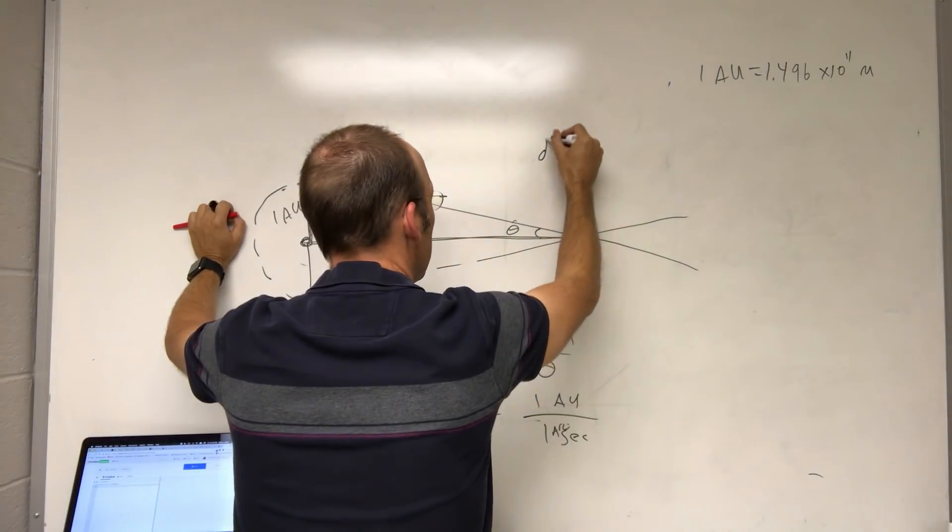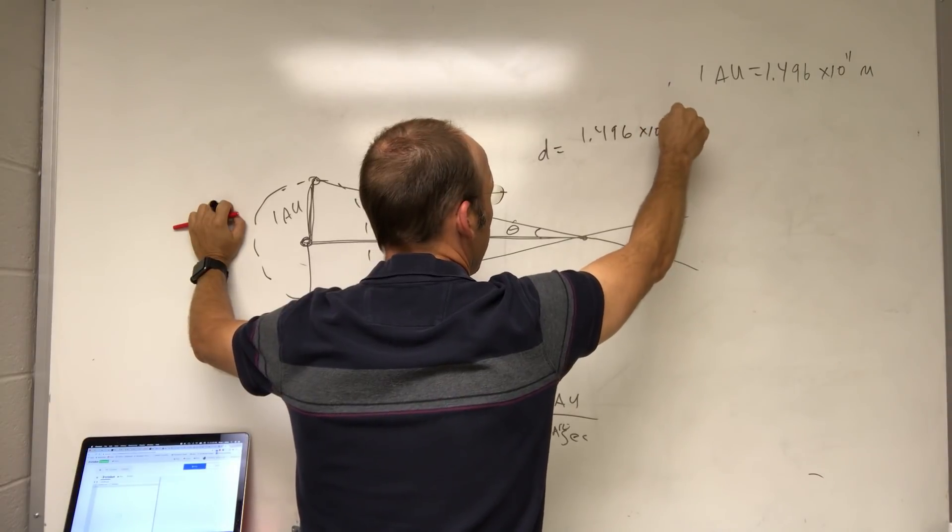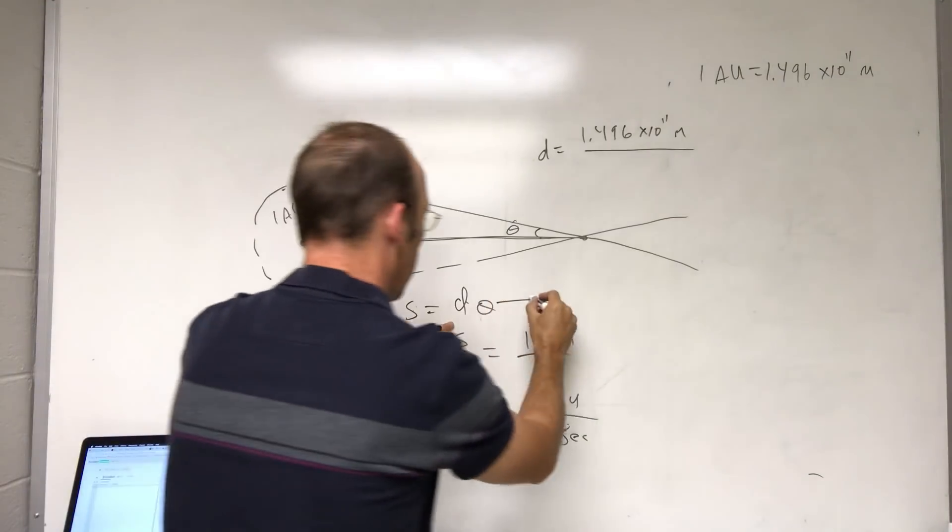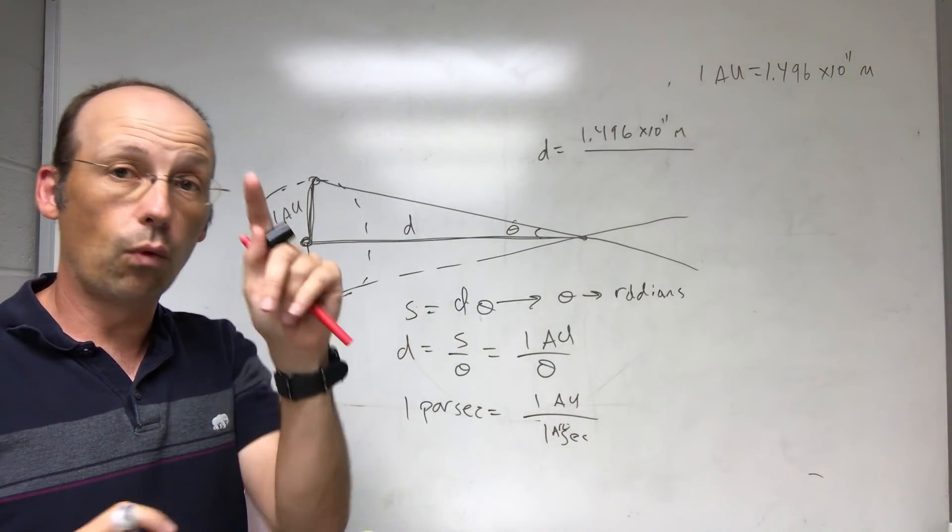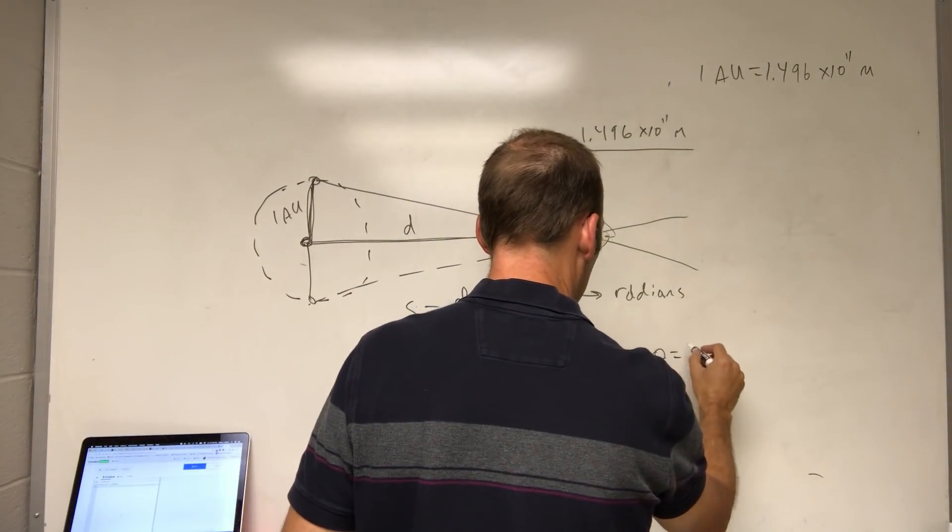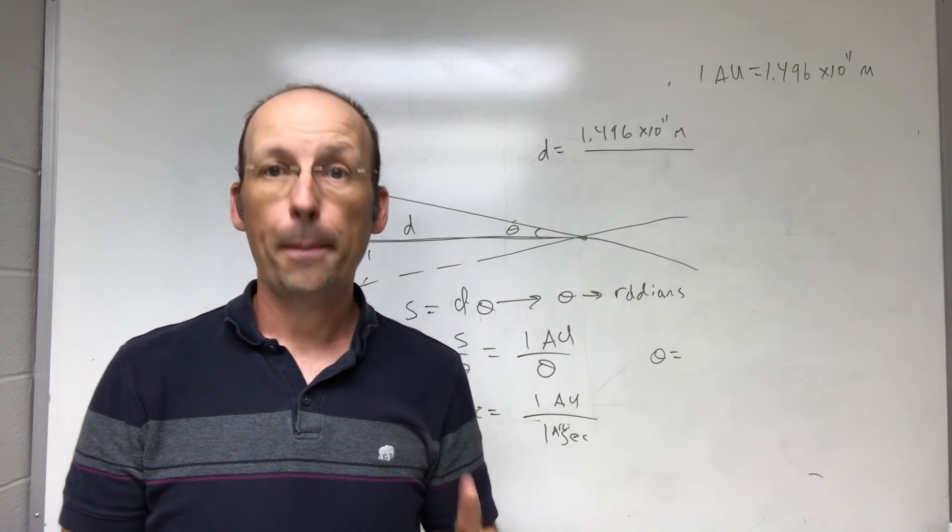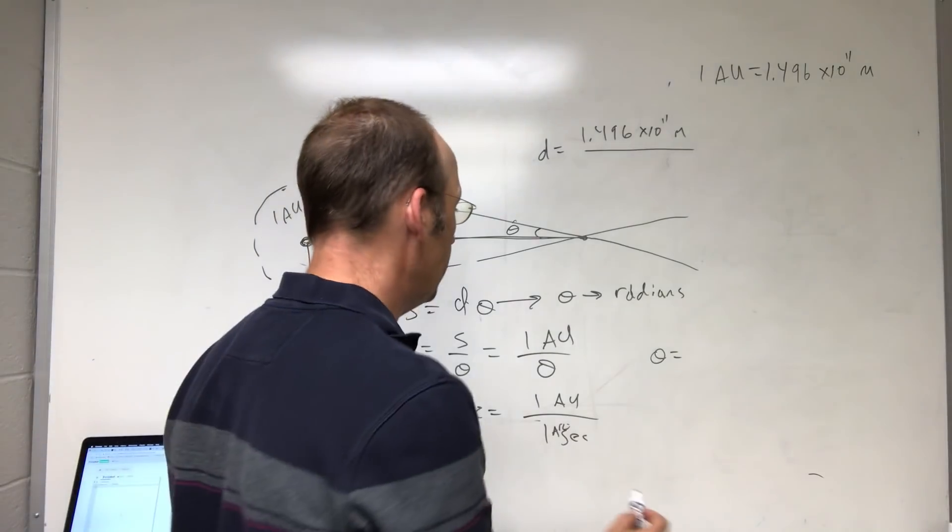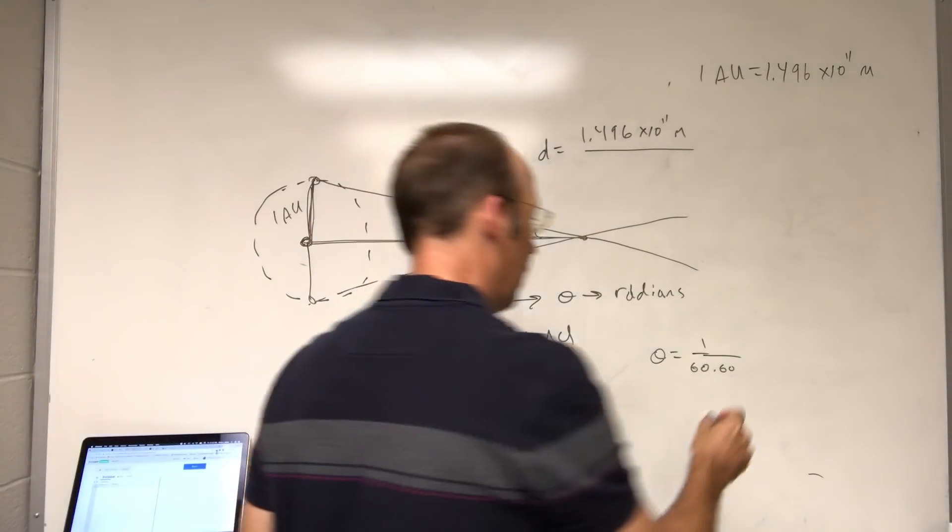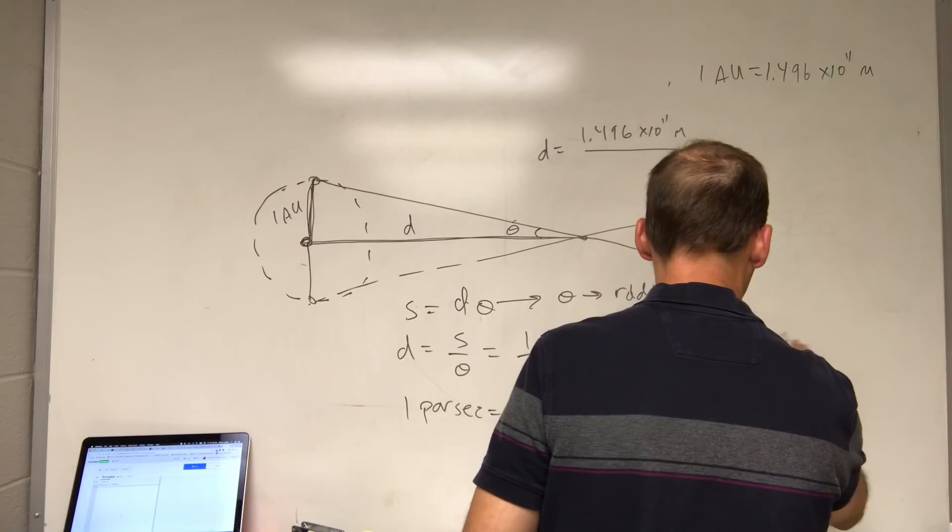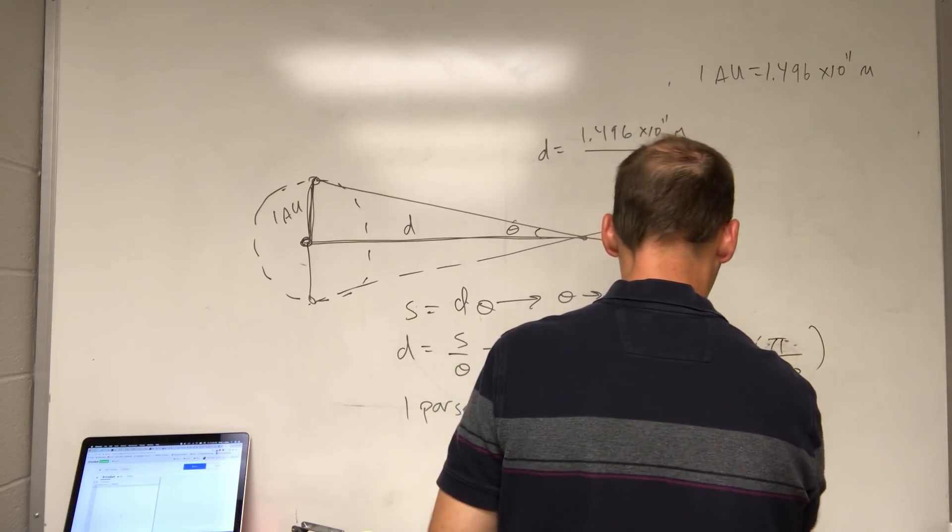So I'm going to say distance is one AU, which I'm going to, I want this in meters. So I'm going to put that in meters, 1.496 times 10 to the 11th meters. And I need my angle. In order for this to work, theta would have to be in radians. So now I need to get theta of one second in radians. So if I have one minute, one minute is one sixtieth of a degree. One second is one sixtieth of a minute. So one arc second is going to be one over 60 times 60 degrees, so one over 3600. Now I need to convert that to radians. So that's in degrees. So if I multiply by pi radians divided by 180 degrees, and I get my answer.